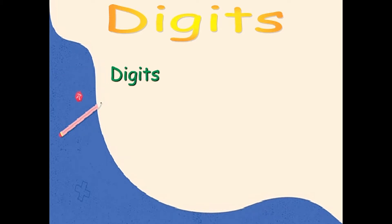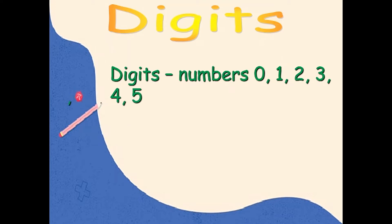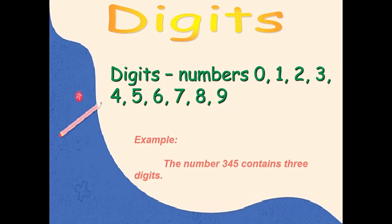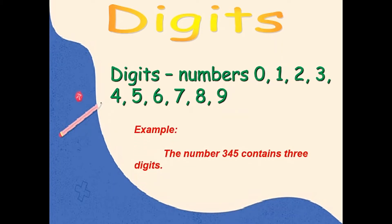What are digits? When we say digits, we are referring to a number or numbers from 0 up to 9. For example, the number 345 contains 3 digits, and these are 3, 4, and 5. Digits are numbers from 0 to 9. Is it clear? Let's continue.